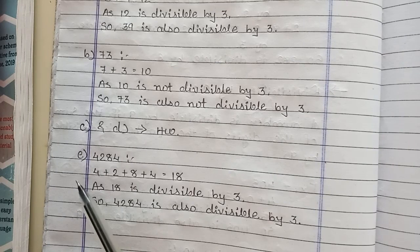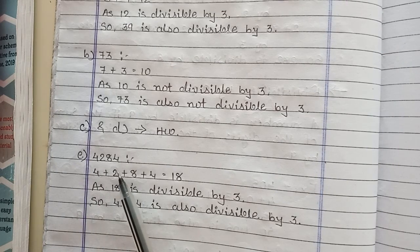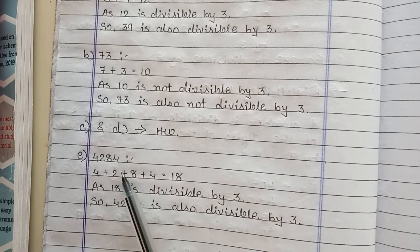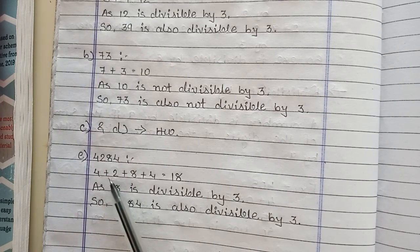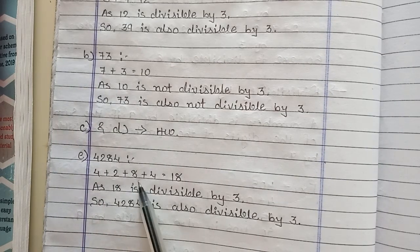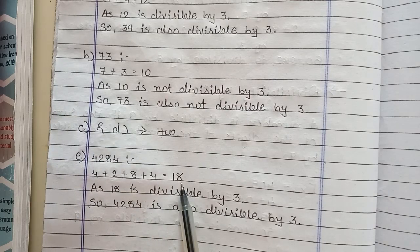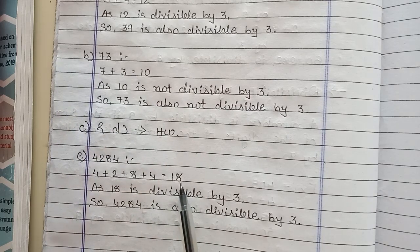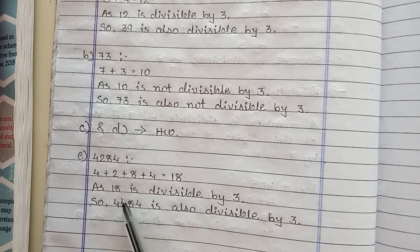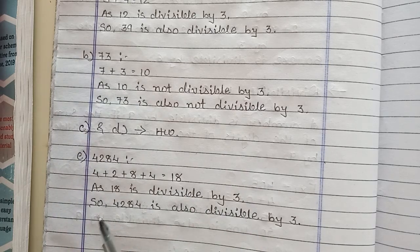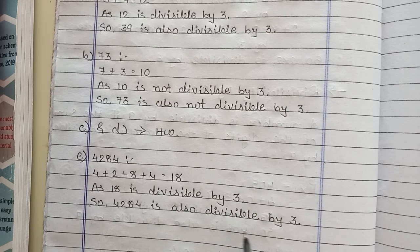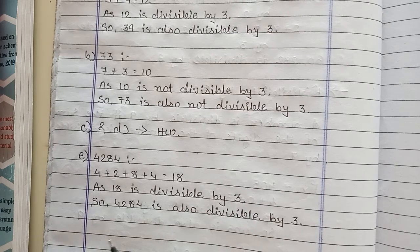Parts C and D are homework. Now Part E: 4284. 4 plus 2 plus 8 plus 4 is equal to 18. 18 is in the 3 times table. As 18 is divisible by 3, so 4284 is also divisible by 3.